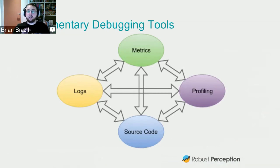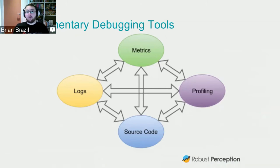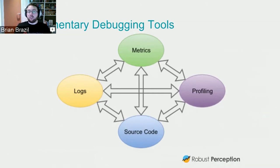There is no panacea — no one tool is going to help you debug. You have to bring in a myriad of tools depending on how complicated and what the nature of the problem is. Metrics are great for figuring out roughly where the problem is, but they'll never tell you exactly which request from a user is to blame — for that you need logs. Neither metrics nor logs are likely to tell you which line of code needs to be optimized — that's something for profiling. All of those tie back to source code, and you jump between these as you narrow down a problem.